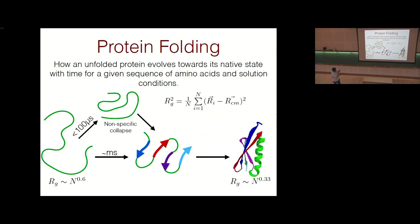A protein needs to be folded to perform its function, but at high temperatures or high denaturant concentrations the folded state unfolds and proteins behave like random coils. Experimentalists generally use temperature and denaturants both to unfold these proteins.